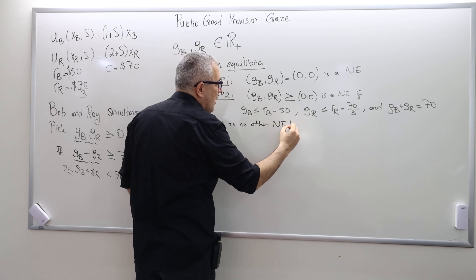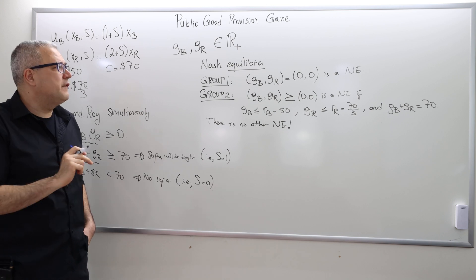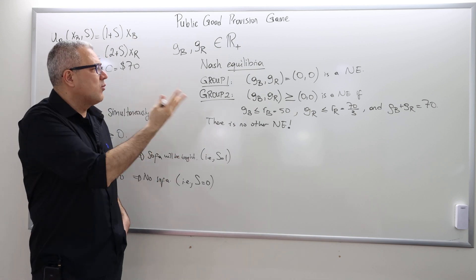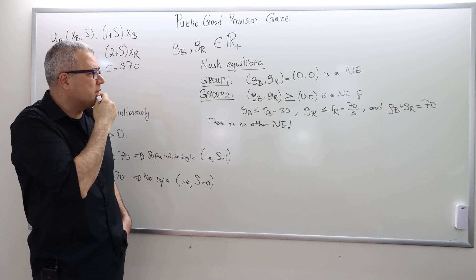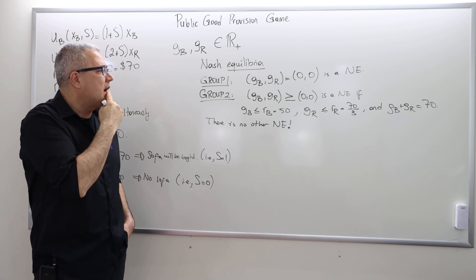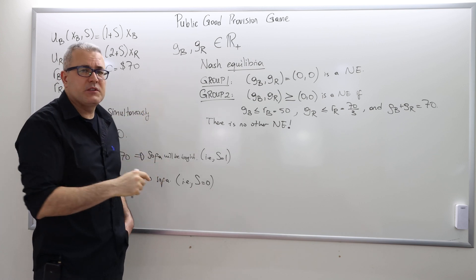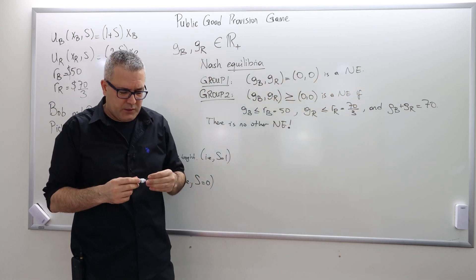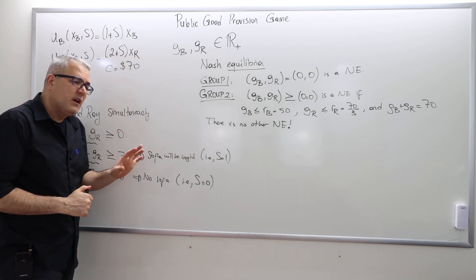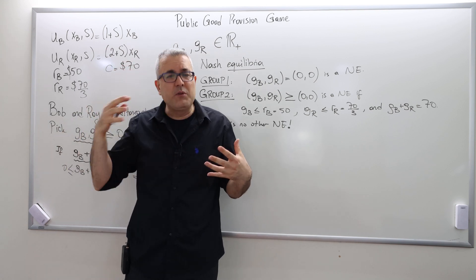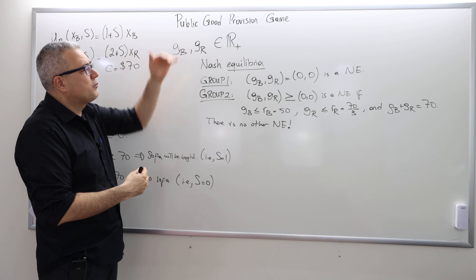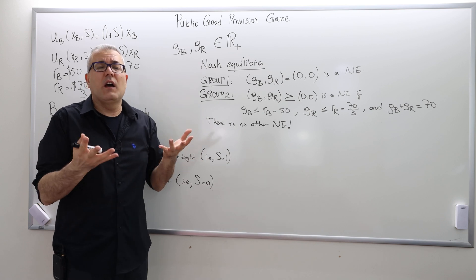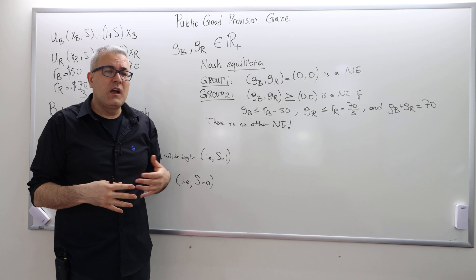I will try to convince you why these are Nash equilibria, because in an exam you have to show why — you have to make a formal argument. But first, let's understand what these statements are saying. Basically, all pretty efficient ways of splitting the cost can be supported as a Nash equilibrium of this game. So playing this private public good provision game doesn't really solve our problem — they still cannot decide which way to split the cost.